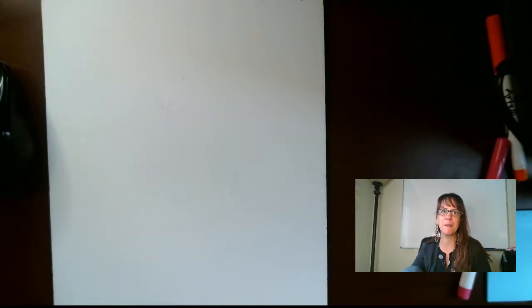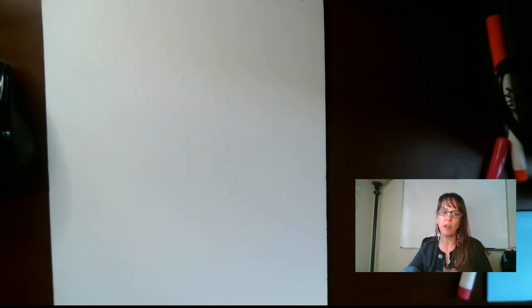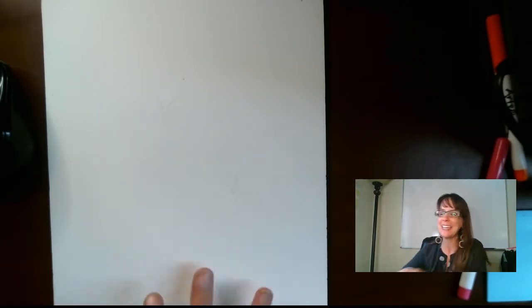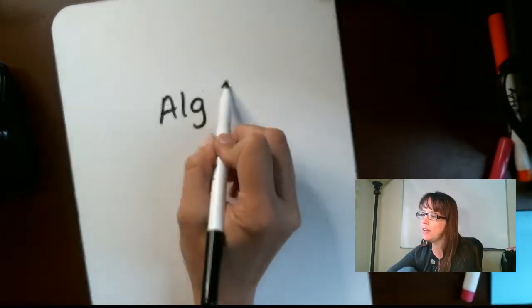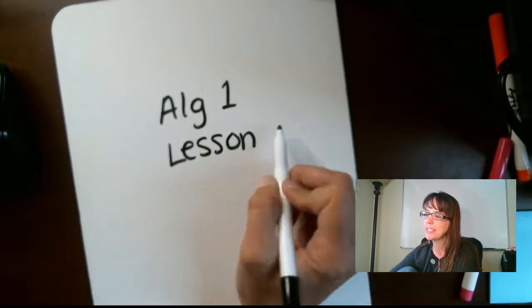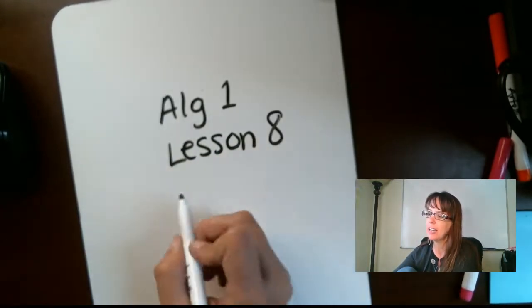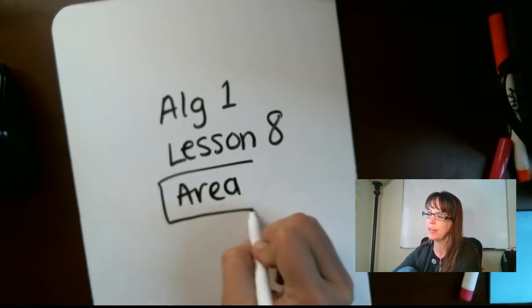Hi, my favorite students. Welcome back. Today we're talking Algebra 1 — this is out of the Saxon 3rd Edition book. We are looking at Lesson 8 today. Algebra 1, Lesson 8. We are talking about area — finding the area.